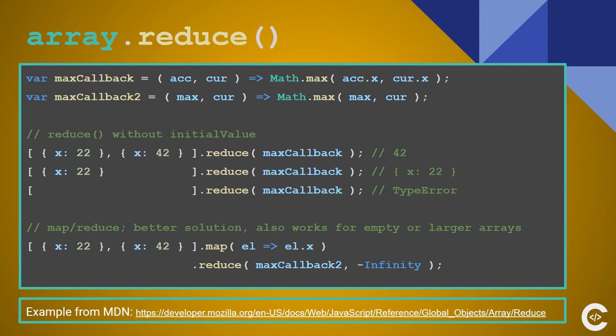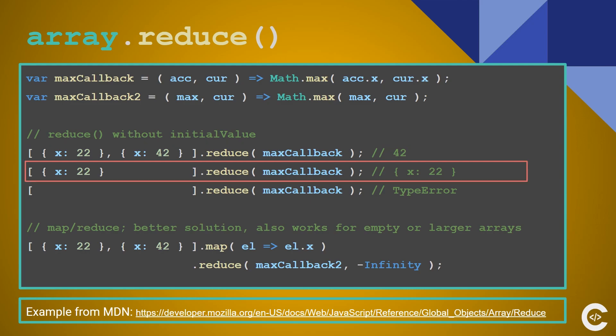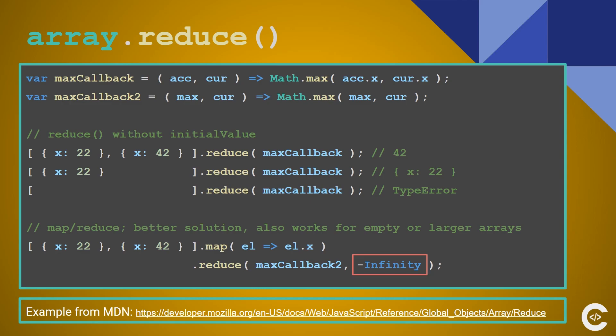Looking at the example from MDN — the following line works fine and returns 42. But the next line returns an object with X corresponding to 22 instead of returning the number 22. This happens when you don't pass an initial value to reduce. A third example throws a TypeError because there are no elements in the array and if you don't pass an initial value and the array is empty it throws an error. A better approach is to map the array of objects into an array of numbers first — mapping to an array with 22 and 42 — and then execute reduce to get the result we want.